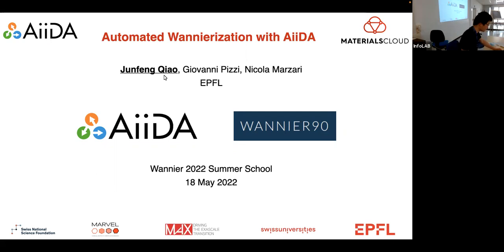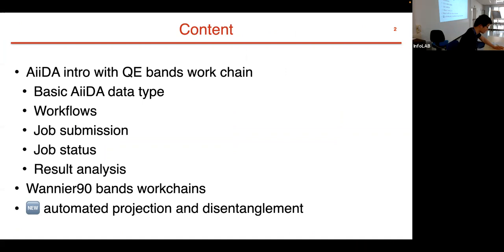We start the second session, a practical Wannier90 tutorial with AiiDA. The introduction covers using AiiDA for calculating Quantum ESPRESSO band structure. In this first tutorial, we'll look at basic AiiDA data types, workflows, job submission, job status, and result analysis. Then we'll launch a Wannier90 bands workflow using the SCDM method, and briefly introduce the latest automated initial projection disentanglement method for high-throughput Wannier90-ization.